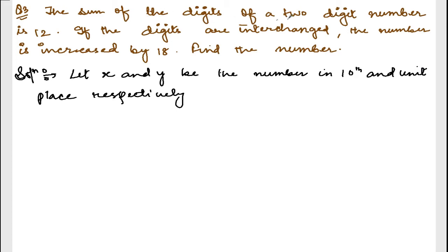Now, the sum of digits of the two-digit number is 12. So, given, what is given is if you add x plus y digits, you are going to get 12. And if the digits are interchanged, the number is increased by 18.